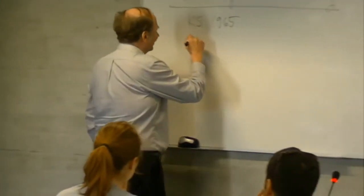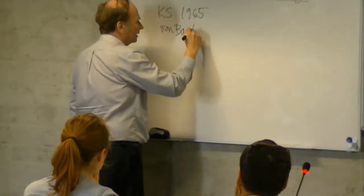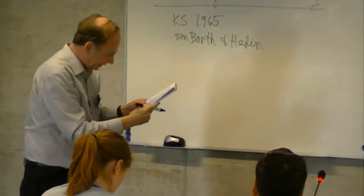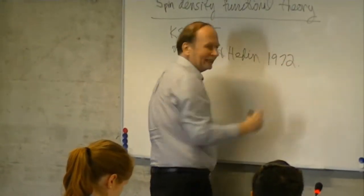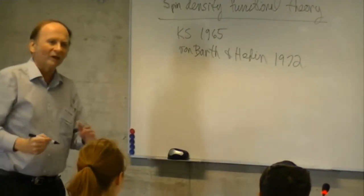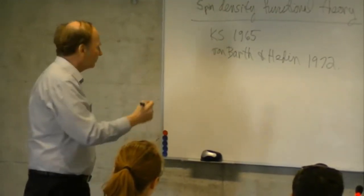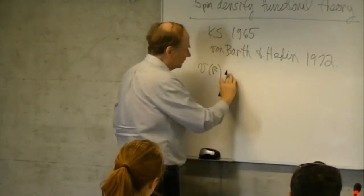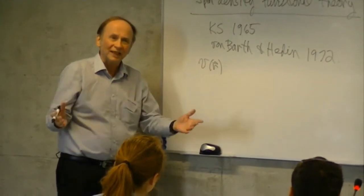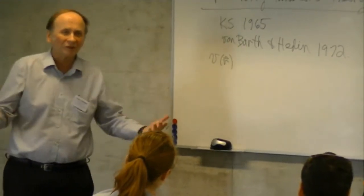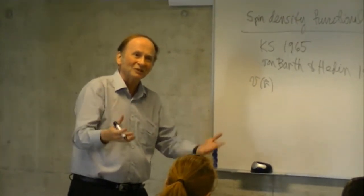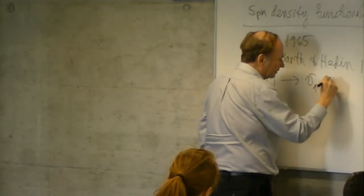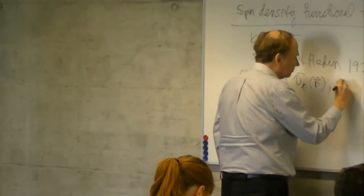It was developed further by von Barth and Hedin in 1972. The basic idea is that you can prove the Hohenberg-Kohn theorem and the Kohn-Sham theorem for a more general set of external potentials. What we've talked about so far uses a scalar potential that is the same for spin-up and spin-down — that covers typical atoms and molecules where the external potential is spin-independent.